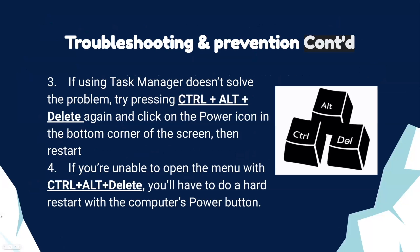If using Task Manager doesn't resolve the problem, try pressing Control, Alt, and Delete again and click on the power icon in the bottom corner of the screen, and then restart. If you're unable to open the menu with those three keys, then you'll have to do a hard reset with the computer's power button. If you're wondering how these keys look on your keyboard, there's a picture on the side — you can look for them right now.